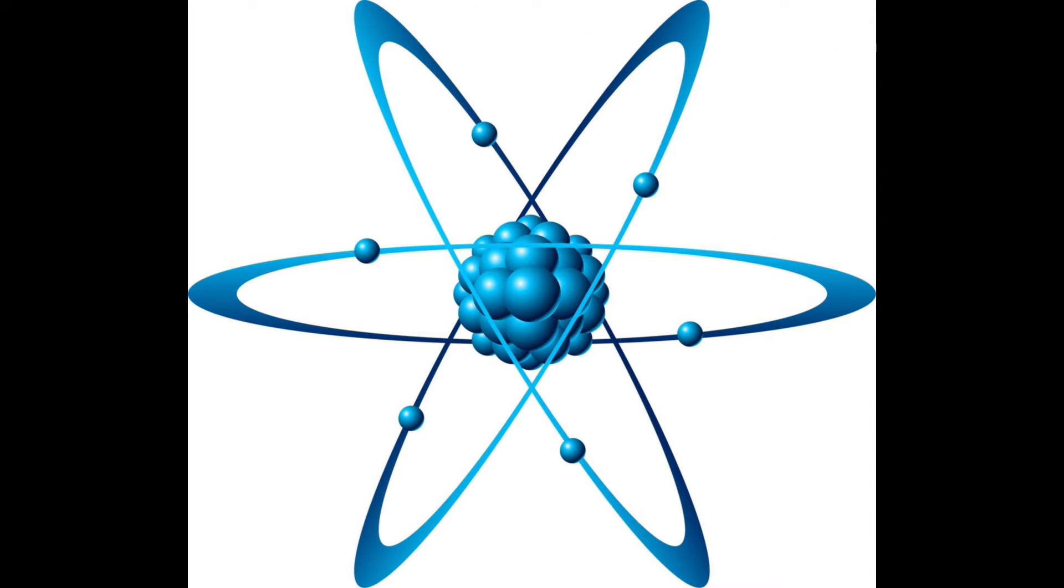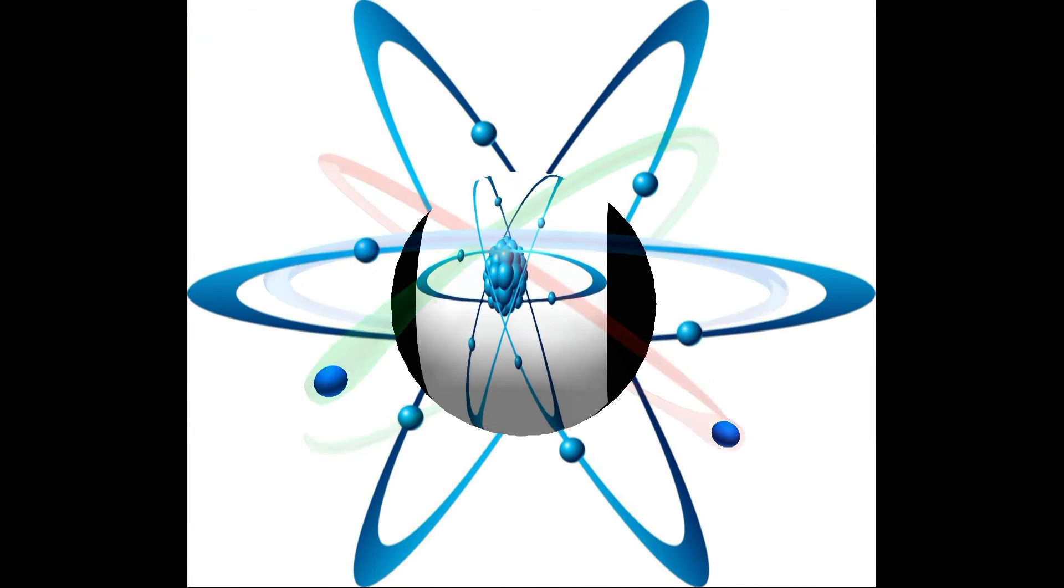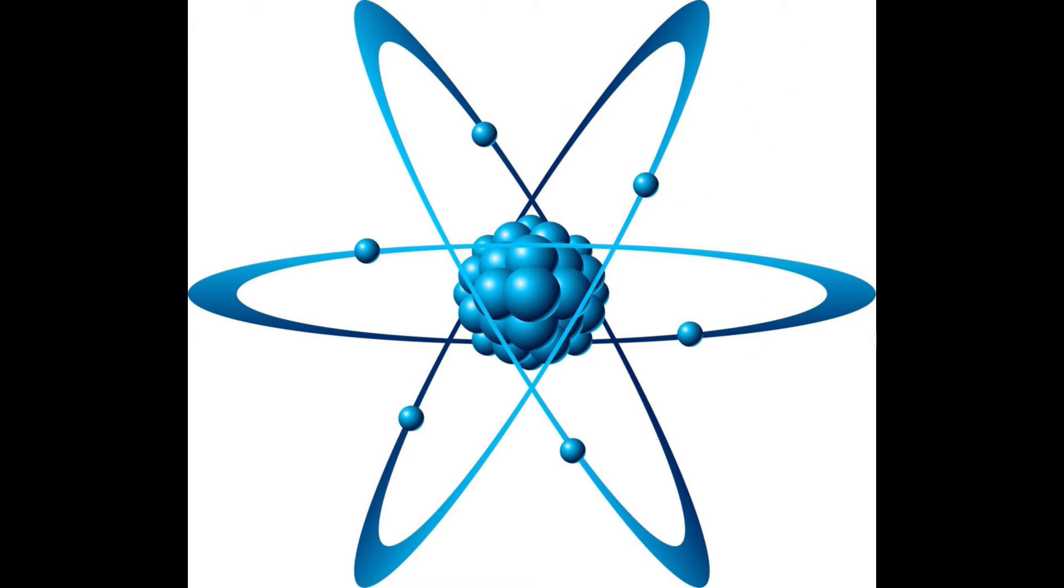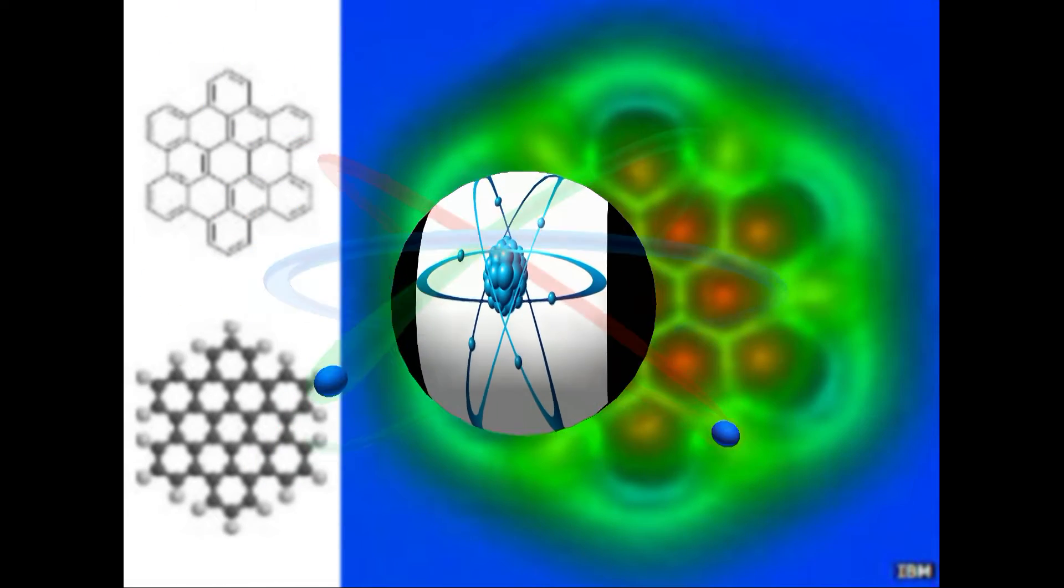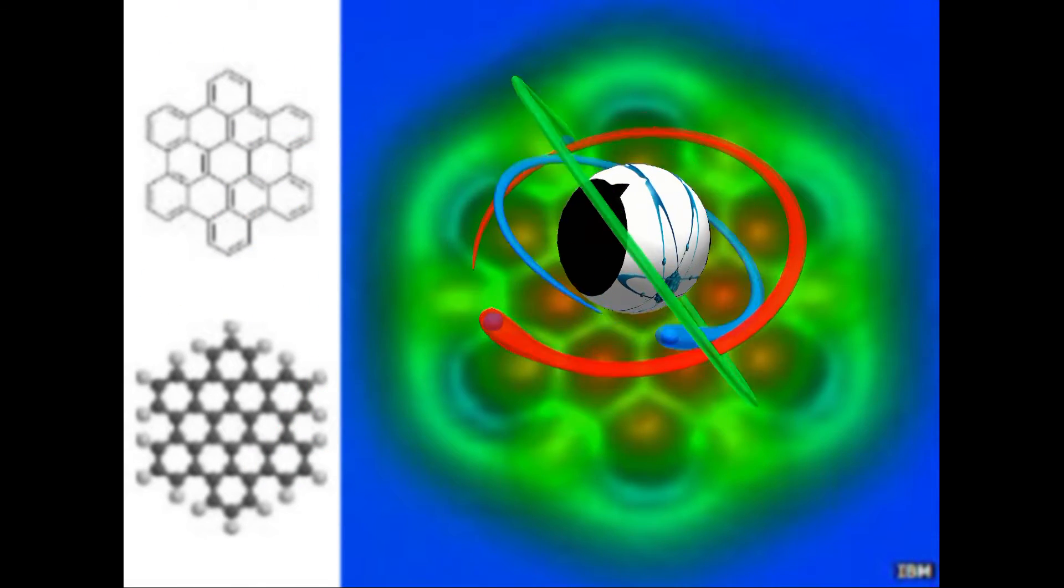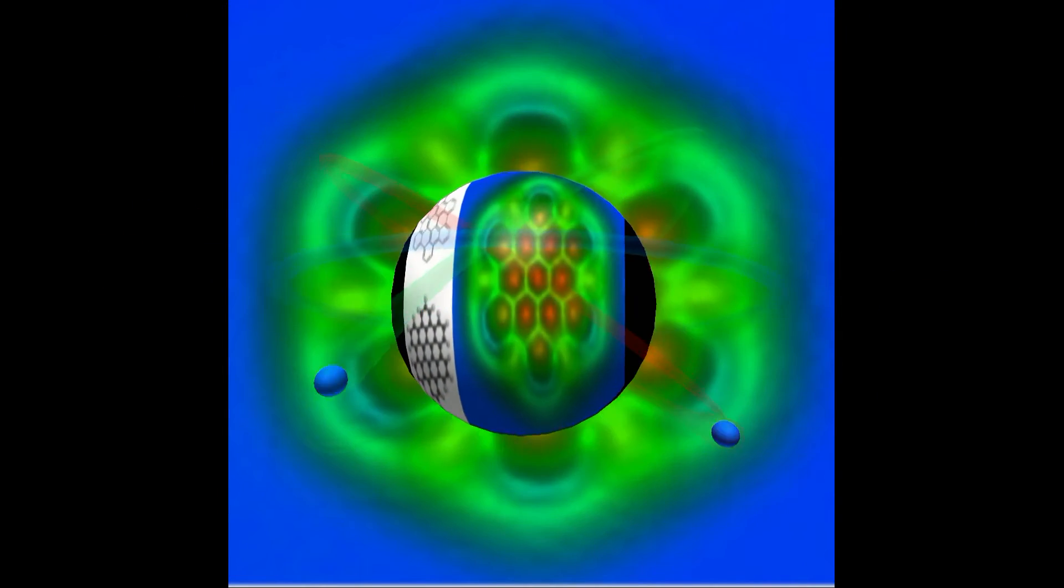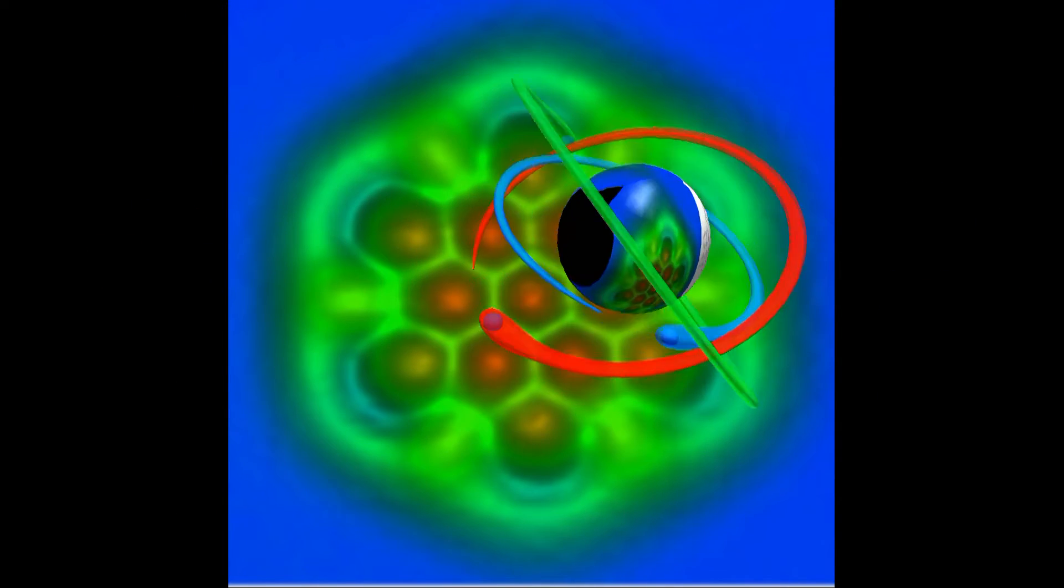I believe that what scientists call atoms are simply these individual pixels or building blocks of information. An atom is not a physical object but simply a quanta or packet of information made up of energy. Just because we give something a name does not mean that it now physically exists. The study of the atom is the study of a quanta of energy and not the study of a physical object.